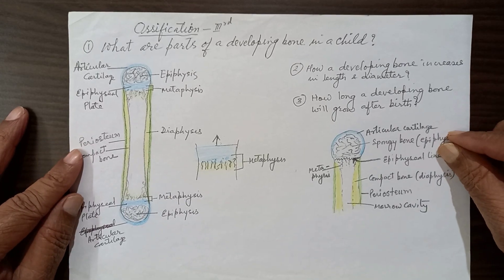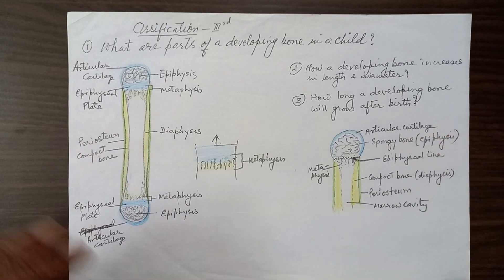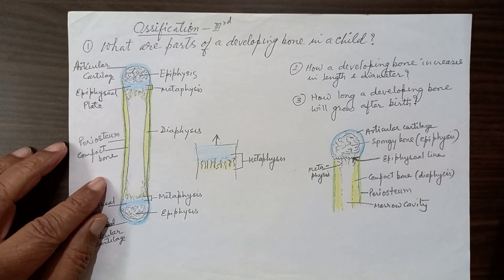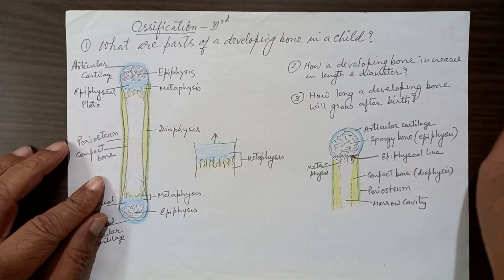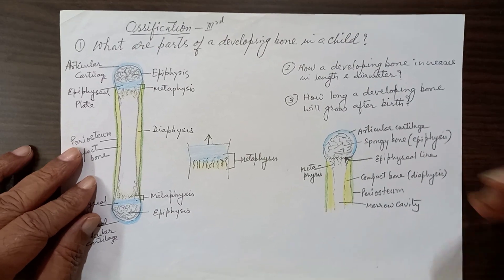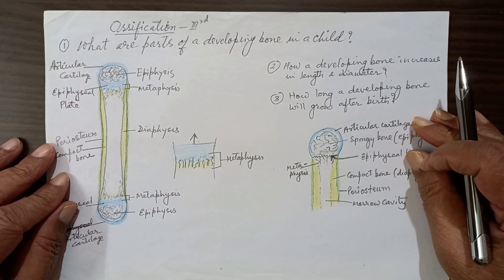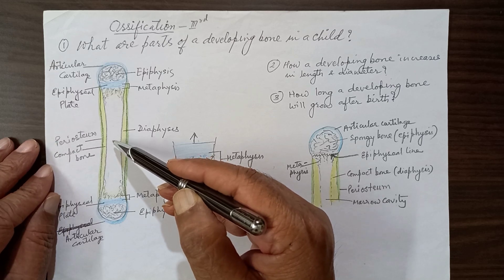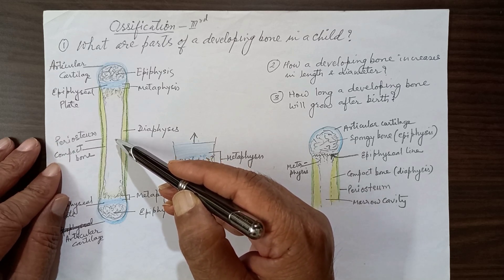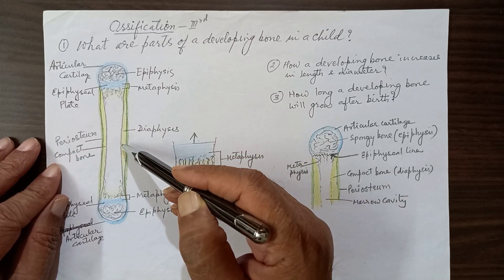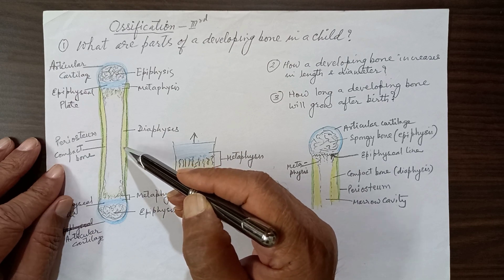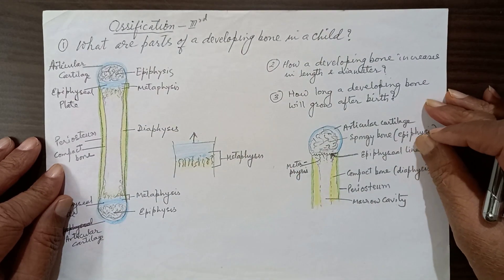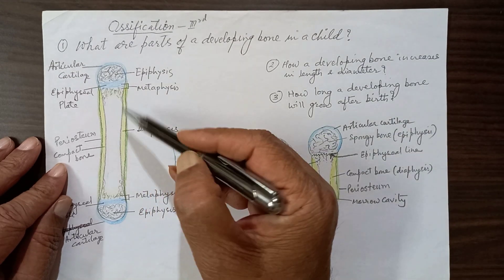Good evening students. This is the third video on ossification. In the last two videos we have seen the process of ossification — what are the parts of the bone which develop from the primary center of ossification. That was the diaphysis, which develops from the primary center, and both the ends develop from the secondary centers of ossification.